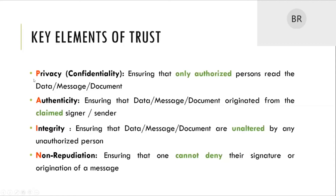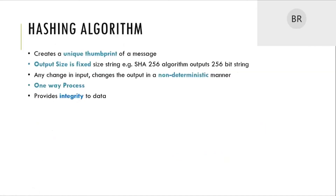The technology which provides all four properties — privacy, authenticity, integrity, and non-repudiation — is public key infrastructure. Before we jump into PKI, we need to understand certain very basic mathematical concepts. We need to understand what is called a hashing algorithm, specifically a cryptographic hashing algorithm. The beauty of this algorithm is that you give a message as input and it will produce a unique thumbprint of the message.